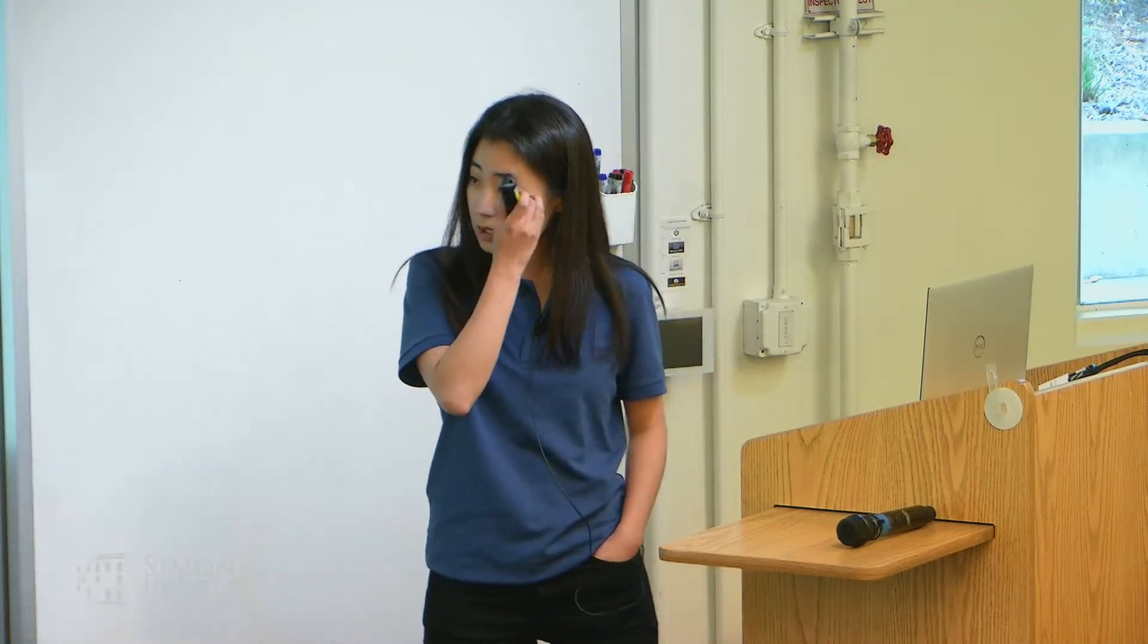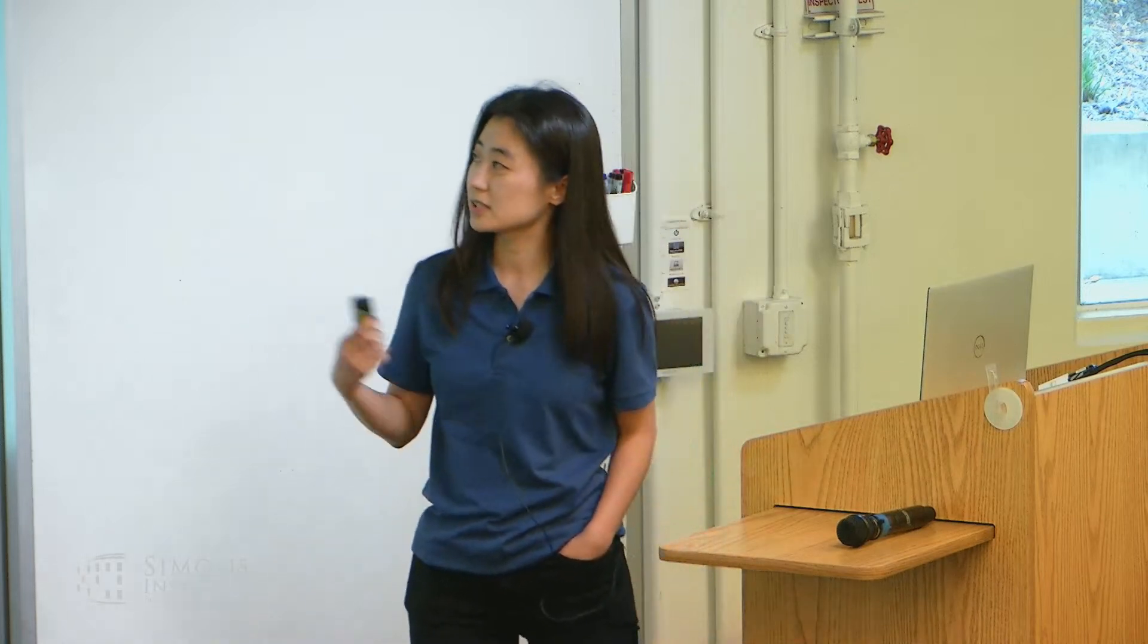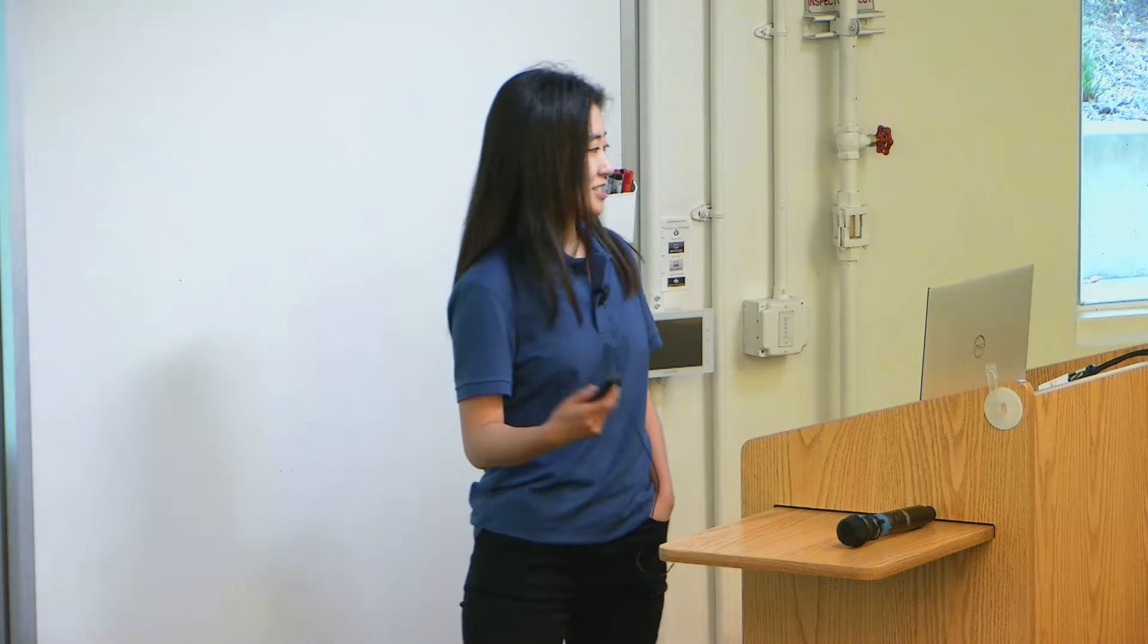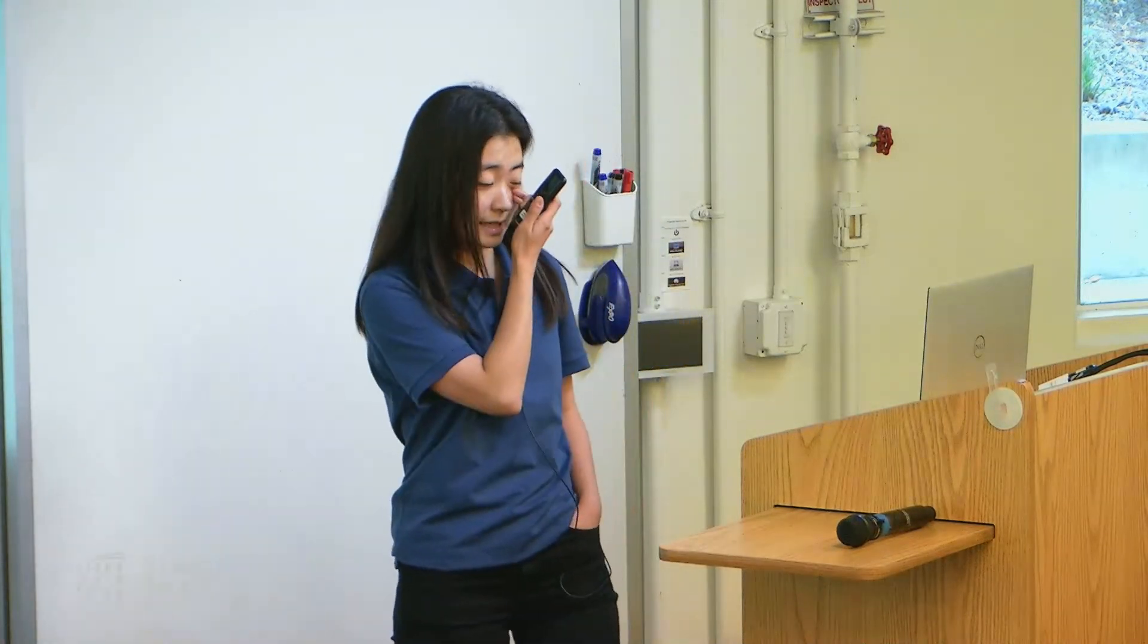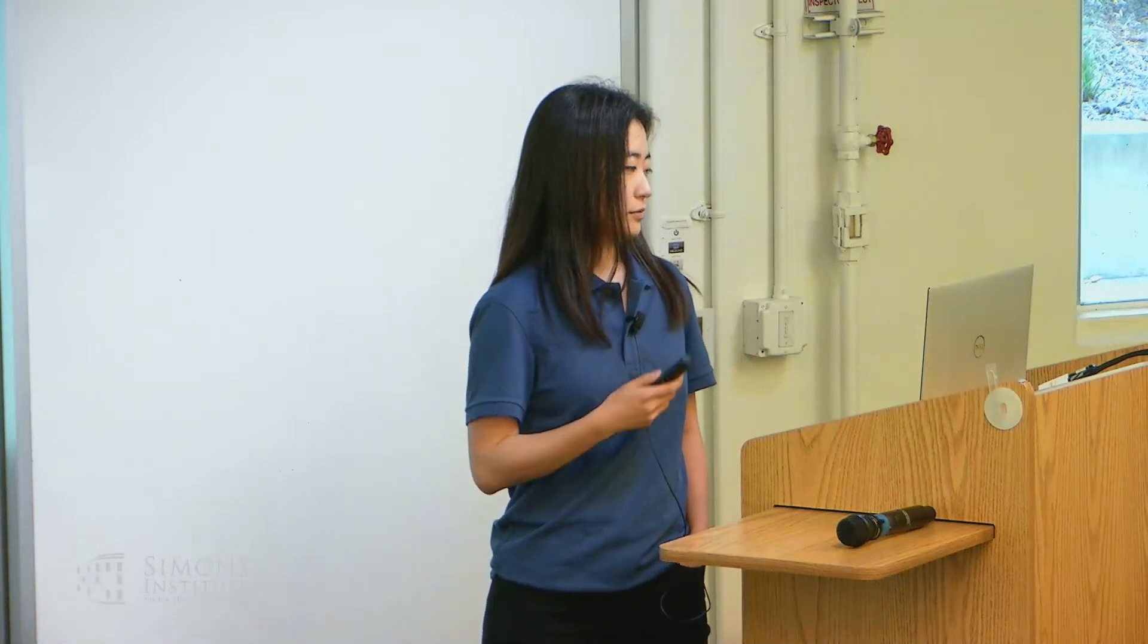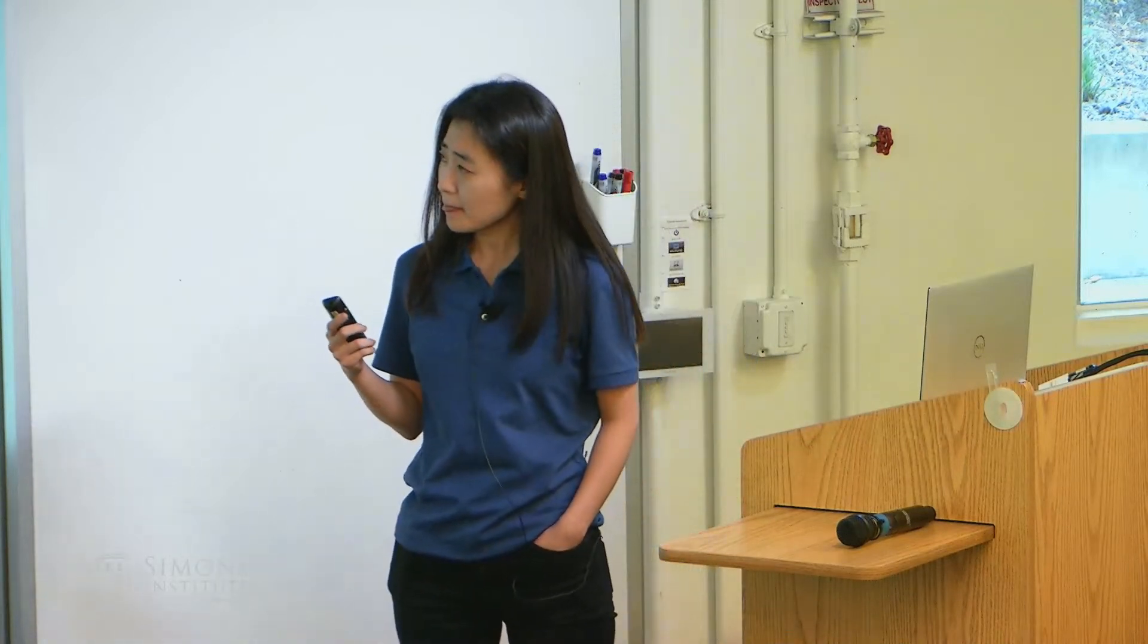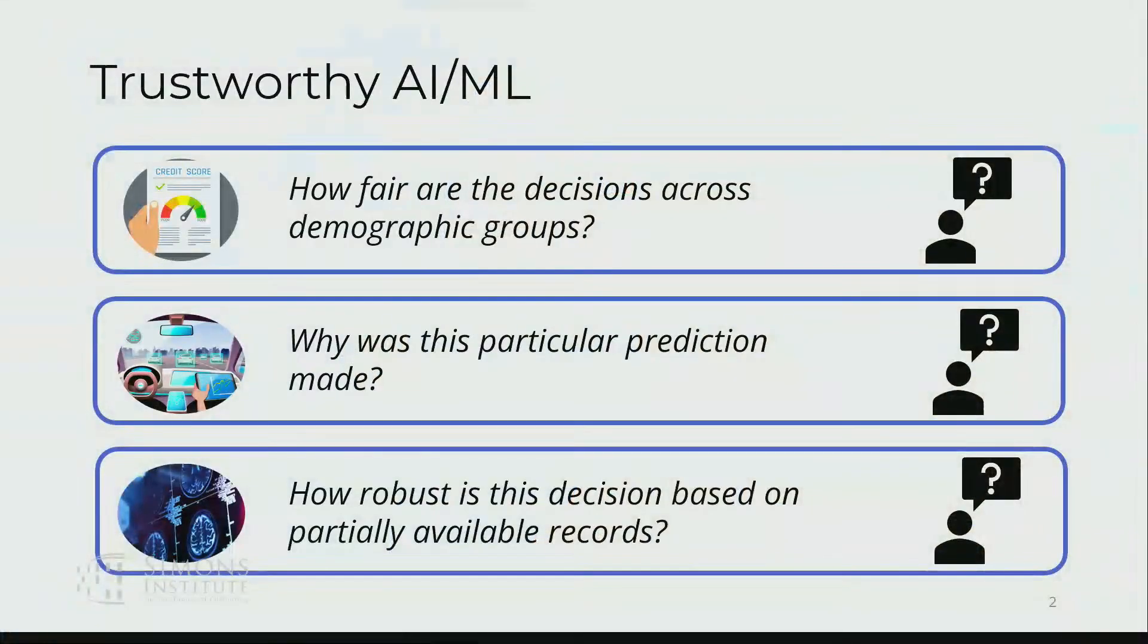Some example questions that I'm thinking about when I say trustworthy AI and ML issues: we often see that AI-based decisions can exacerbate bias that's in the data, so fairness issues are something that a lot of people are getting interested in.